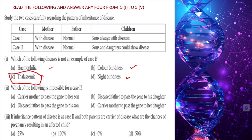Which of the following is impossible for Case 1 (sex-linked)? A carrier mother passing the gene to her son is possible. A diseased father passing the gene to his daughter is also possible. But a diseased father passing the gene to his son is impossible — a father always transfers his X chromosome to his daughter, not his son. So option C is impossible.